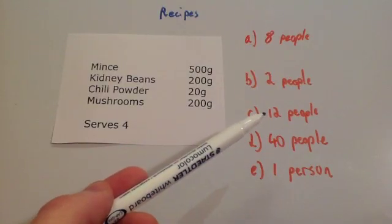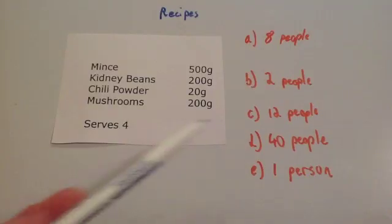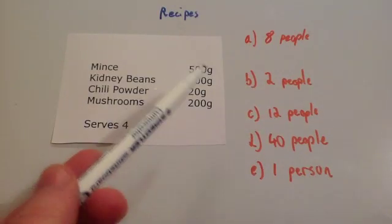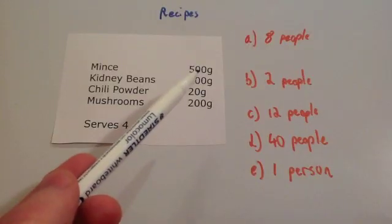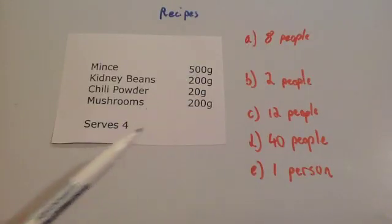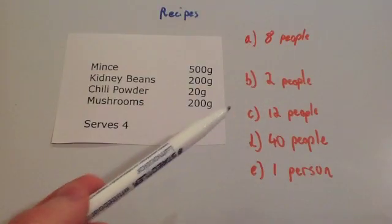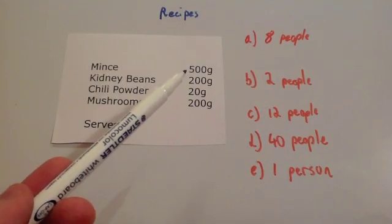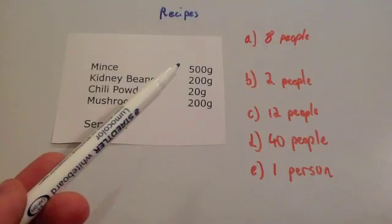What about for 12 people? Well, if you notice, if you multiply four by three you get 12. So you just need to times all these ingredients by three. Because if you times four by three, you'd get 12 people. So you'd use 1,500 grams of mince or 1.5 kilograms.